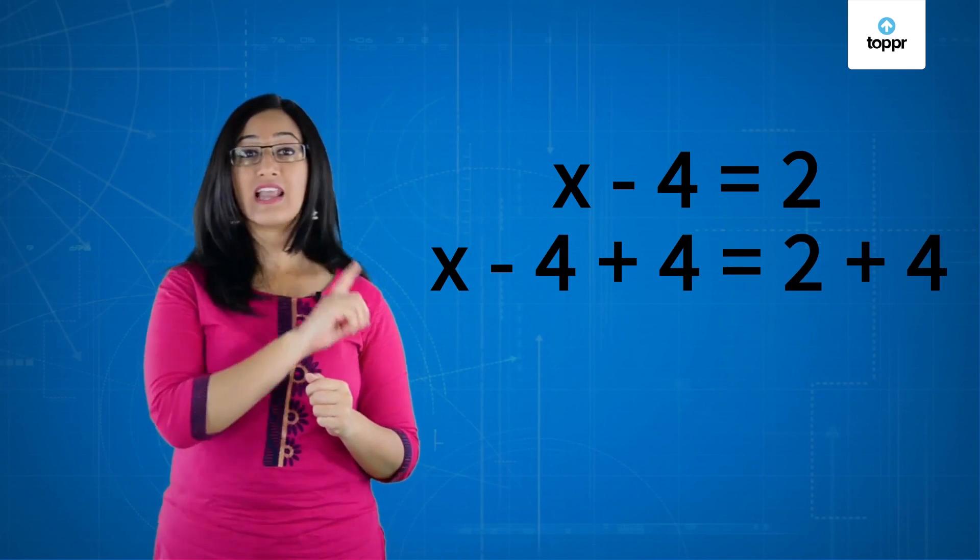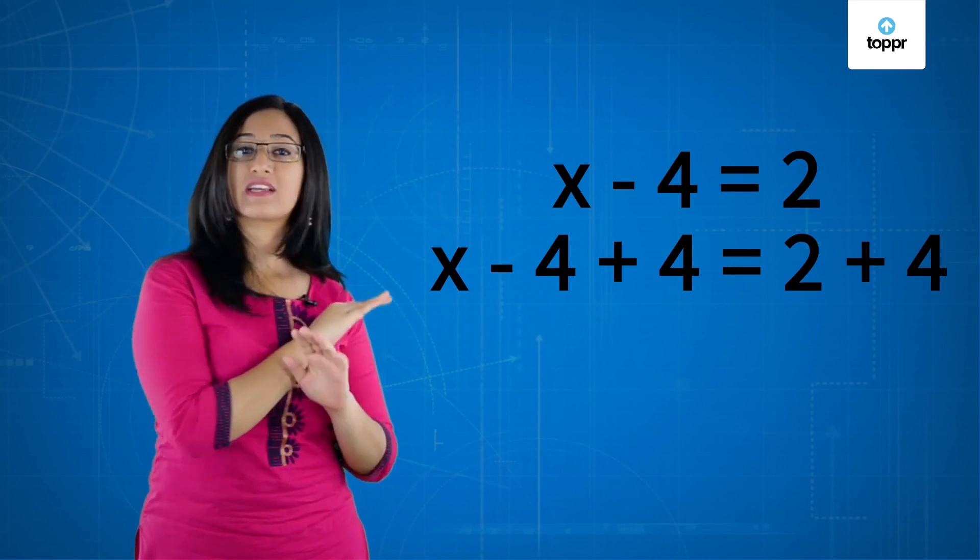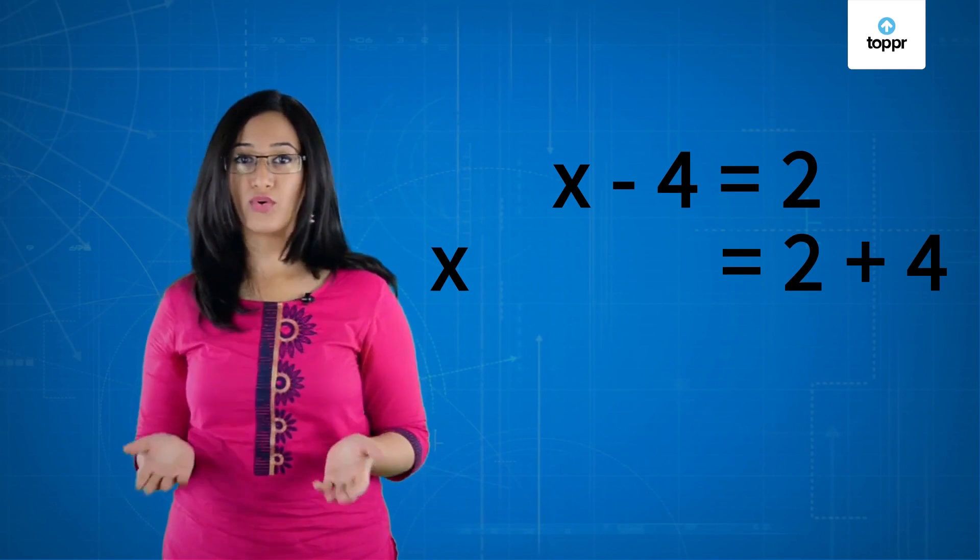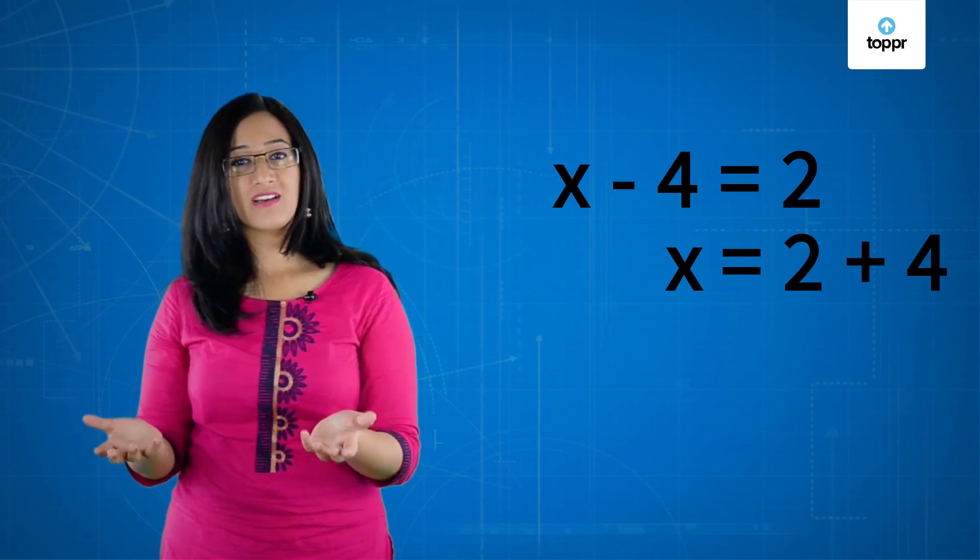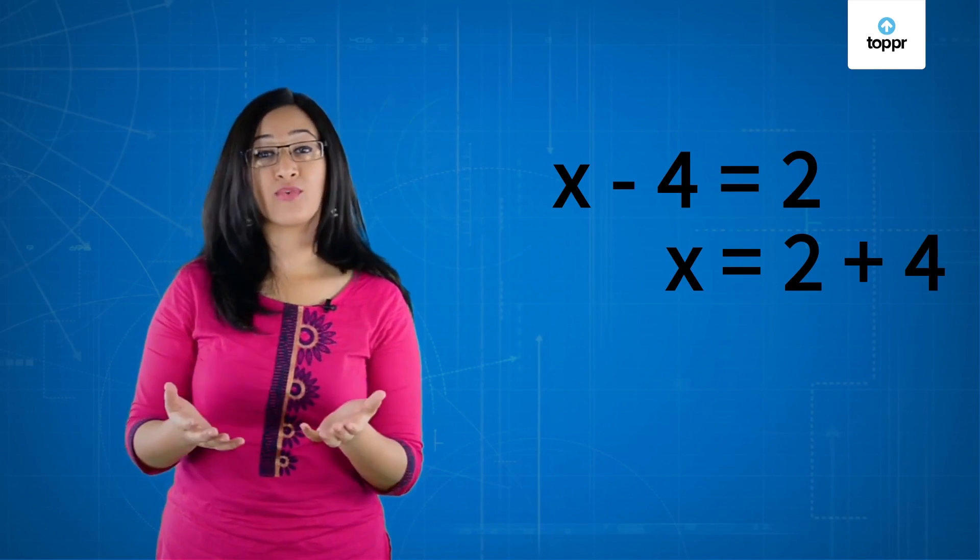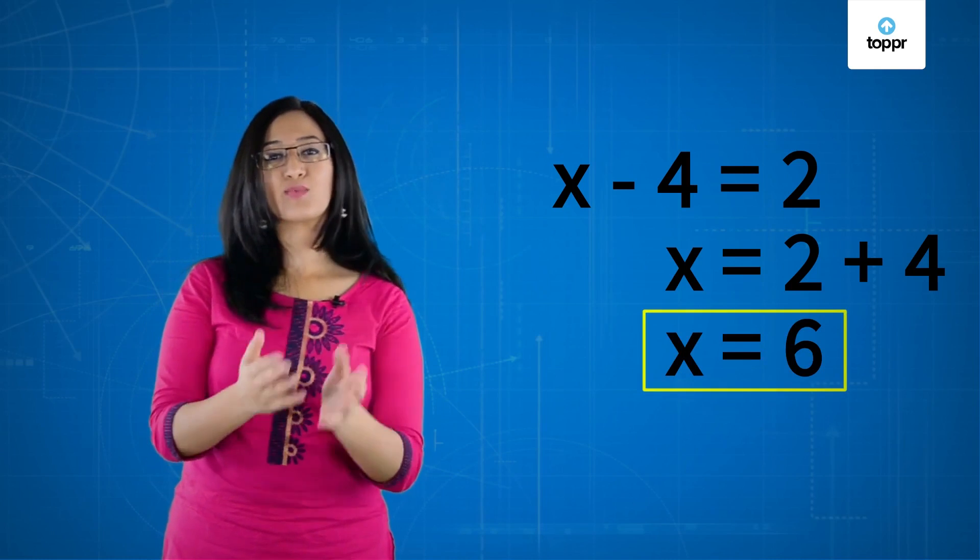So, on the left hand side, the minus 4 and plus 4 cancel each other out and become 0. This leaves us with x is equal to 2 + 4. Now, we can just add up 2 and 4 to give us the value of x which is 6.